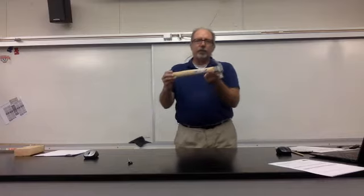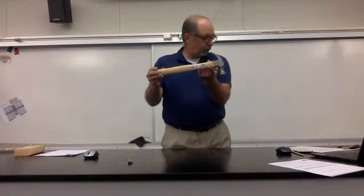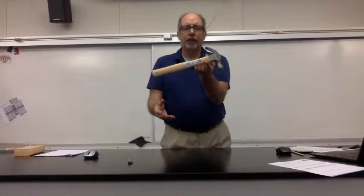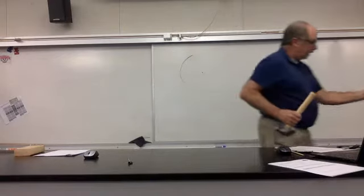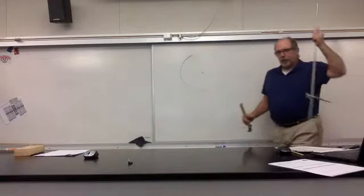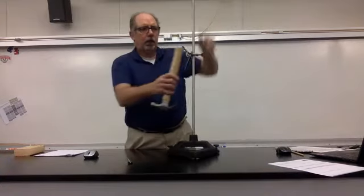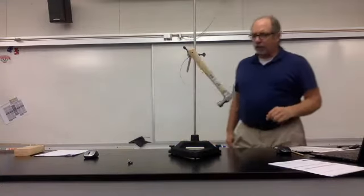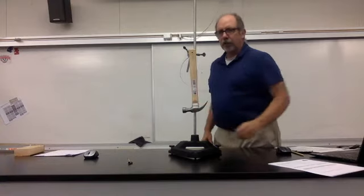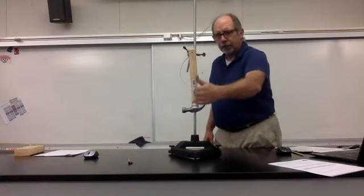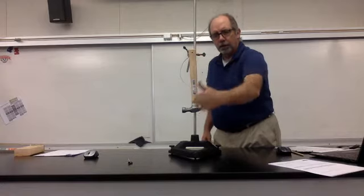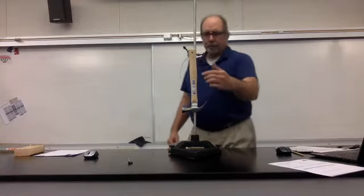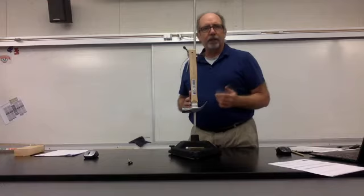The center of mass of an irregular object will be located near one end, and the support point can either be below or above. Instead of supporting it from below, I'm going to hang that hammer from a single support point. When that settles down and comes to equilibrium, the center of mass will be immediately below the support point. And that gives us a way to measure the center of mass of an irregular object.